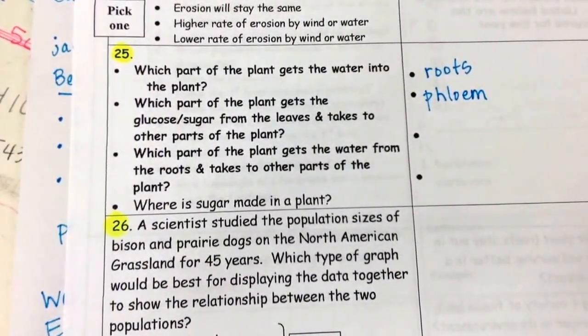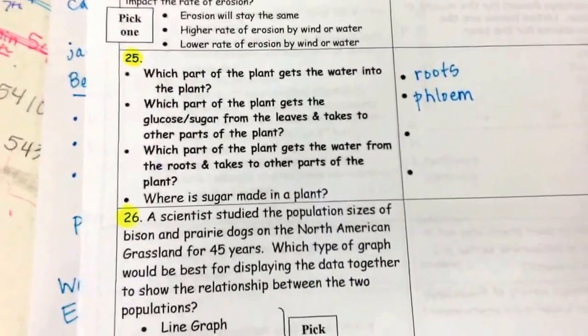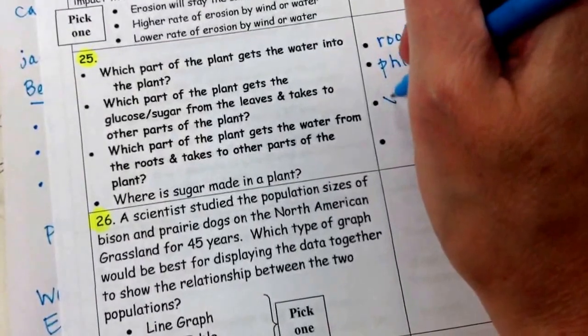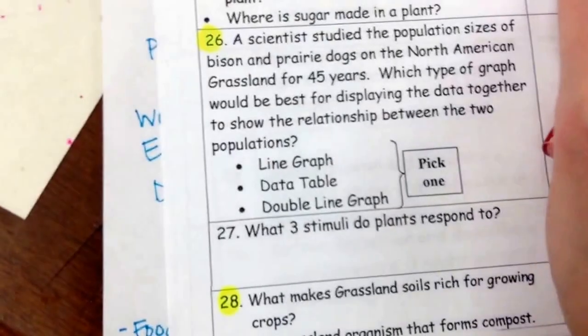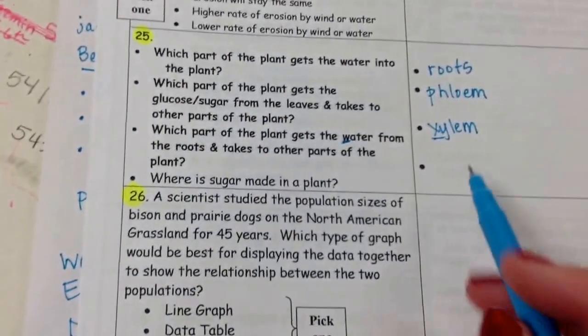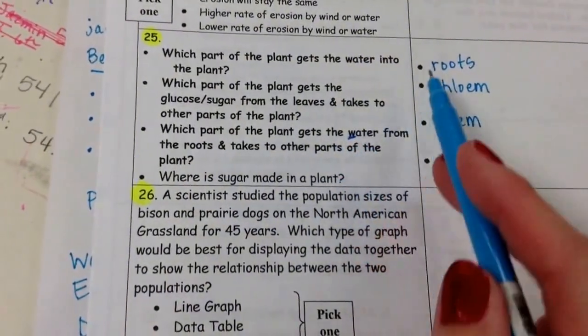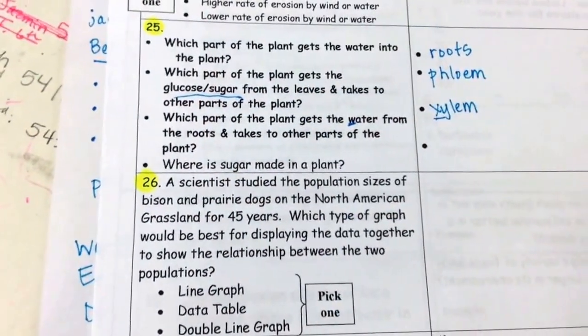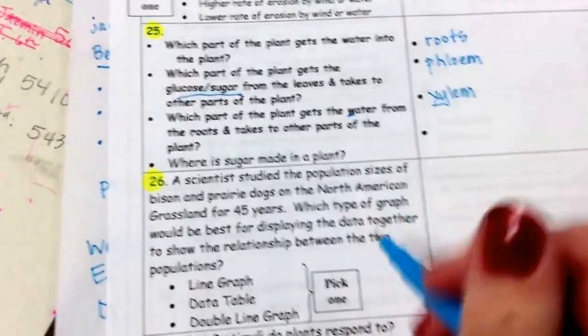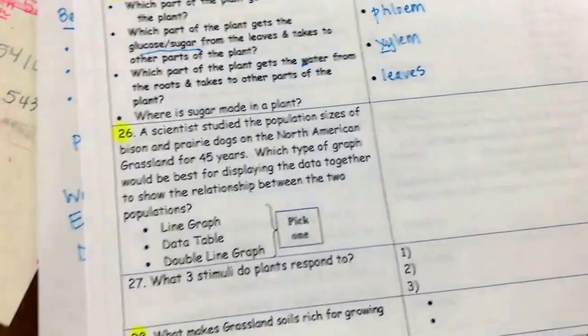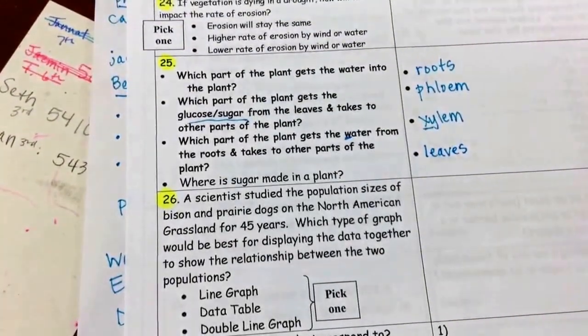It flows down, carries the food. Next bullet. Which part of the plant gets the water from the roots and takes to other parts of the plant? So now it gets the water from the roots, but it needs to go up to the other parts. That's through the xylem. Xylem starts with an X, and it's close in the alphabet to the W, so that's what it carries. Xylem carries water. Phloem carries food, which would be glucose or sugar. Next one. Where is sugar made in a plant? And I told you earlier, I don't know if you remember, but it's made in the leaves.